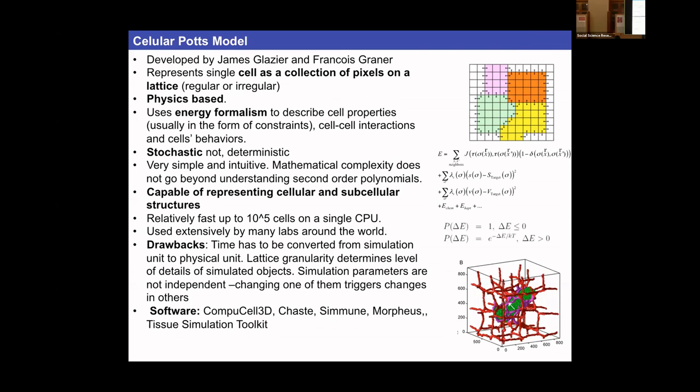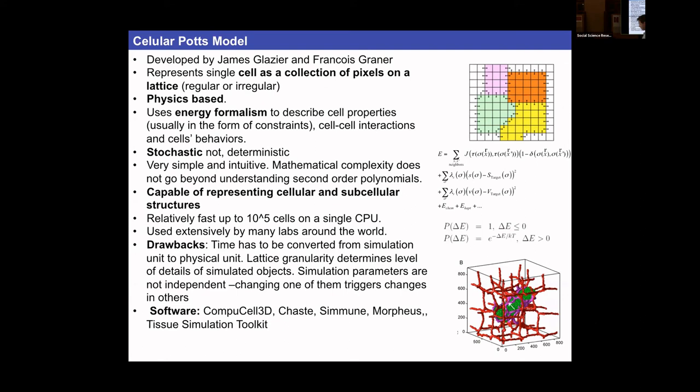The Solar Potts model, also known as the Glazer-Graner-Hogeweg model, is named after the people who made significant contributions to the development of this modeling technique.